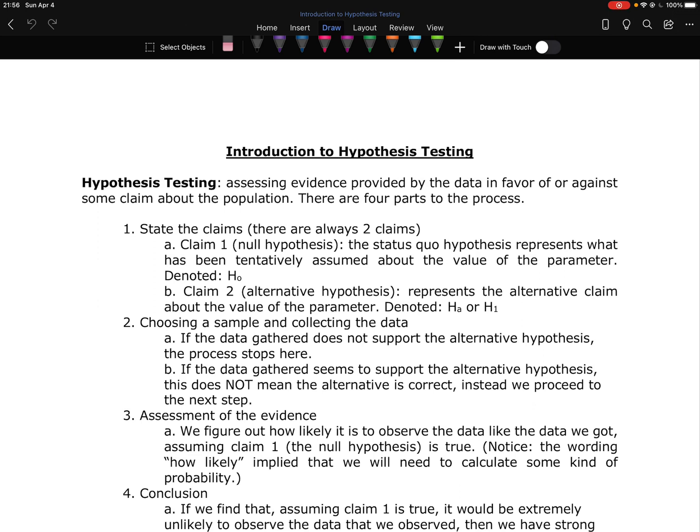There are four parts to the process of performing a hypothesis test. The first step is to state your claims. There are always going to be two claims in a hypothesis test. The first claim is called the null hypothesis. This is your status quo hypothesis. It represents what has been tentatively assumed about the value of the parameter. Remember, parameters are population values.